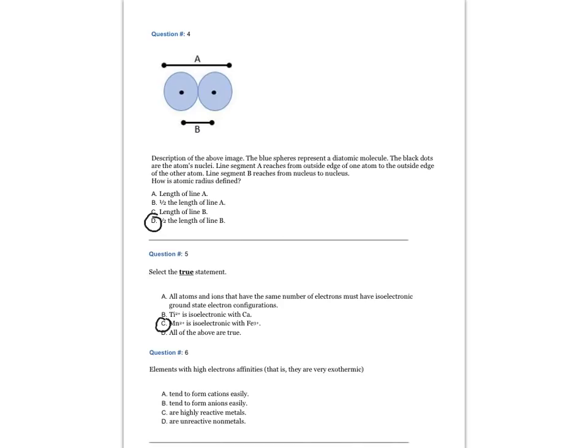Question number six: Elements with high electron affinities, that is, they are very exothermic. The answer is B, tend to form anions easily.